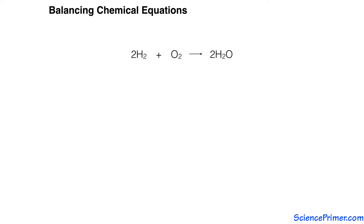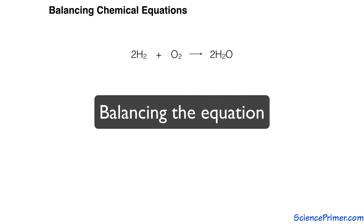In order to be a complete, properly written, balanced equation, the number of atoms of each element present in the reactants needs to equal the number present in the products. The process of determining the proper number of each compound is called balancing the equation.